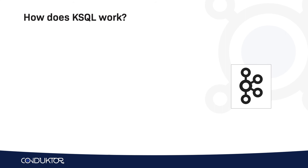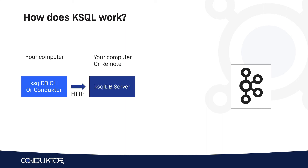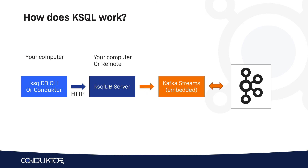So how does ksqlDB work? Your computer, using the ksqlDB CLI or Conductor, is going to be talking to a ksqlDB server — and we're going to launch a ksqlDB server, though it's already launched for us. Then Kafka Streams applications are going to be generated in the ksqlDB server, which in turn are going to talk to Apache Kafka. So that's it for the introduction to ksqlDB. Now let's go ahead with some practice in the next lecture.